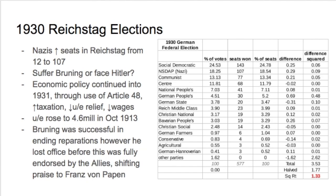Franz von Papen, who becomes the new Chancellor, ends up taking the praise for ending reparations.